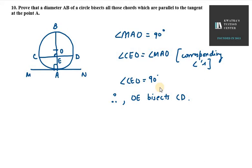Similarly, diameter AB bisects all the chords which are parallel to the tangent.